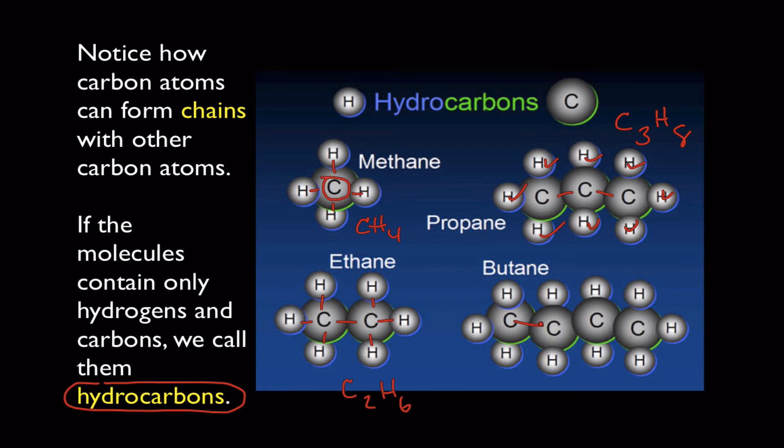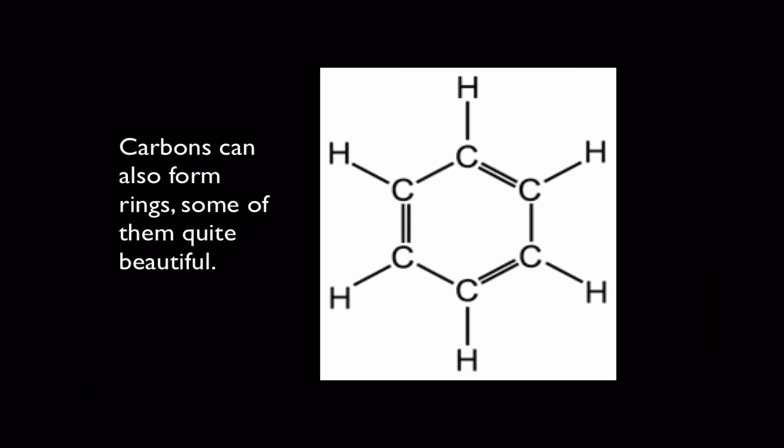And finally, butane, which is four carbons bound together, starting to look more like a backbone here. And this would be C4H10. So, do you guys see a pattern here? CH4, C2H6, C3H8. See how they're going? One, two, three, and then four, six, eight. There actually is a pattern here to what we call hydrocarbons.